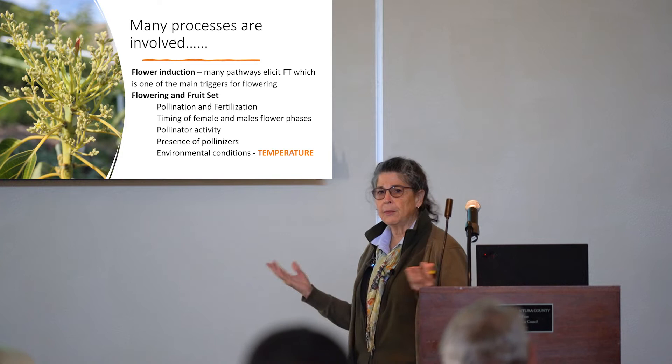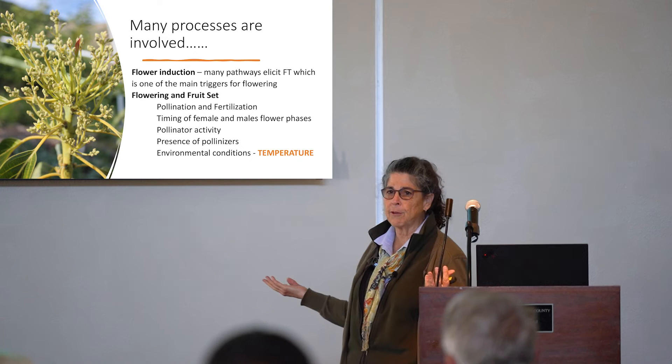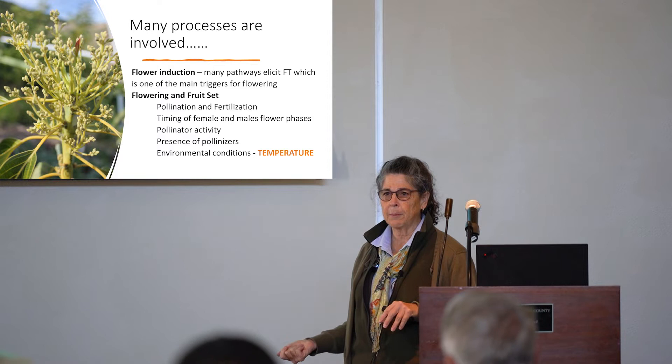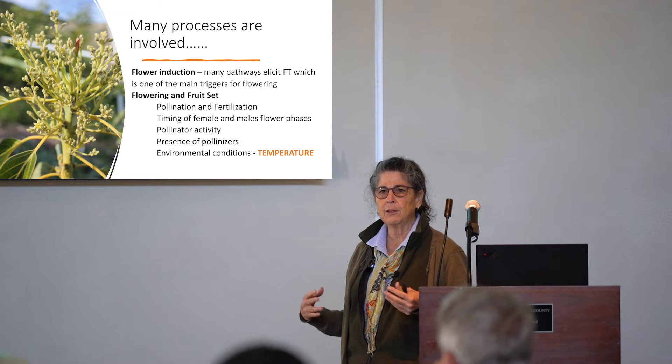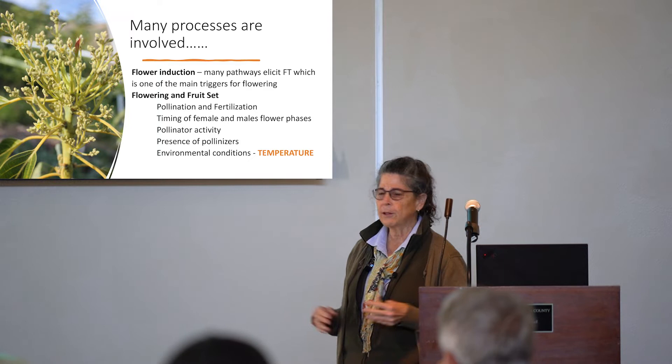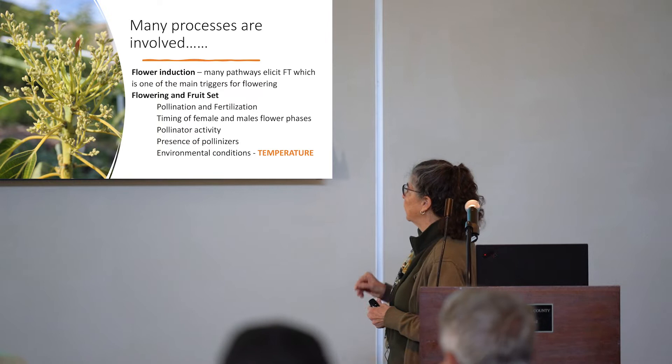Flowering and fruit set involve many things: pollination, fertilization, and the timing of the male and female phases of the flower — I'll talk about that. Pollinator activity I'm not going to cover, but anybody who runs bees knows they are impacted by low and high temperature. You could have perfect conditions, but if the pollinator is not moving around in your orchard, you're going to have problems. I'll also show some data about the presence of pollinizers, and then of course the environmental factor of temperature.